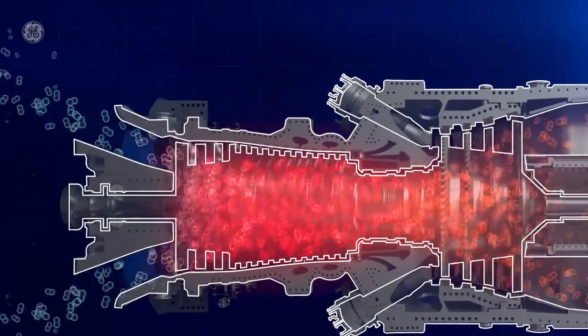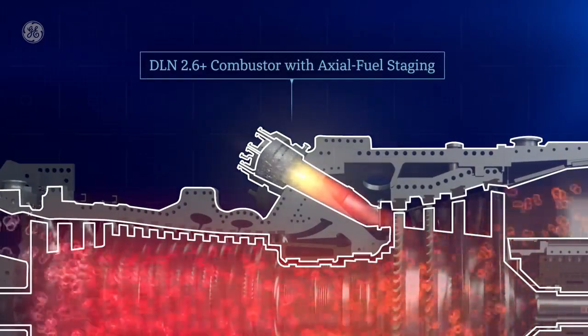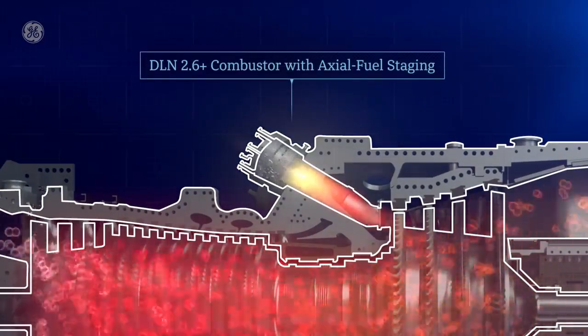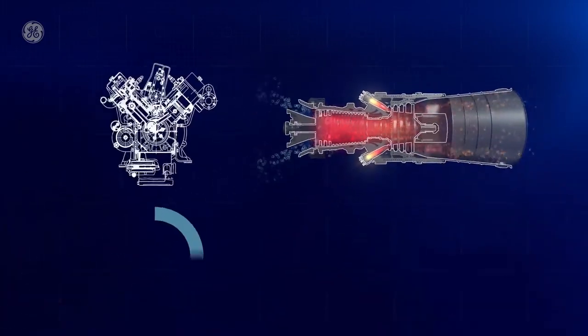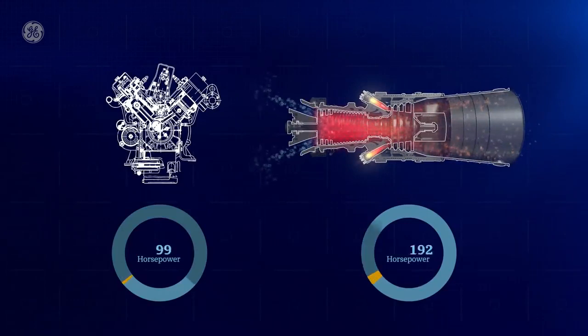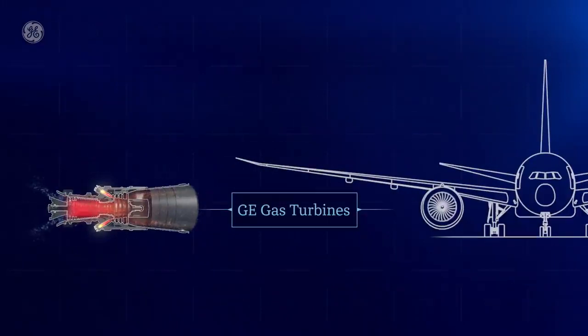Next, fuel is injected into the combustor where it mixes with the hot compressed air and is burned. This is chemical energy at work. Essentially, this is what happens in your family car's engine but at about 2,900 times more horsepower. Actually, it's exactly like the turbine engines on jet airplanes.